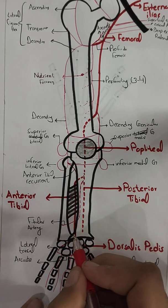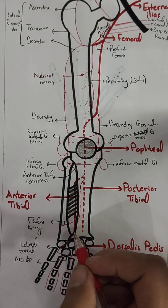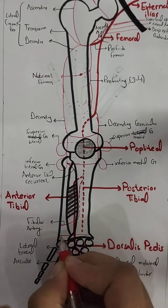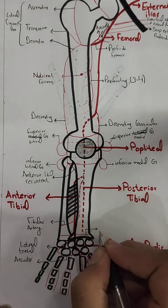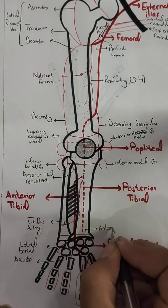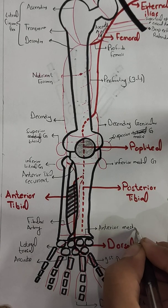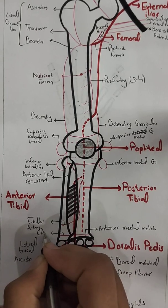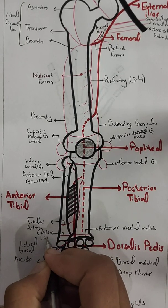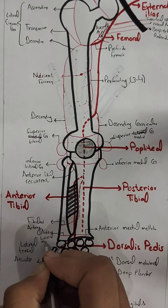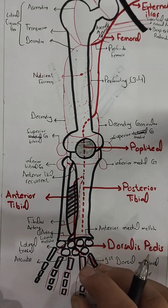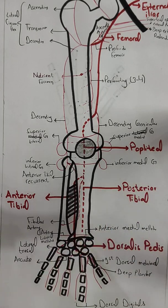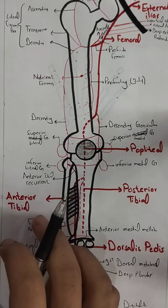There are two more branches of the anterior tibial artery: the anterior medial malleolar and the anterior lateral malleolar branches. This completes the course of the dorsalis pedis artery. We will now see the course of the posterior tibial artery on a separate diagram, since it is on the plantar side of the foot.